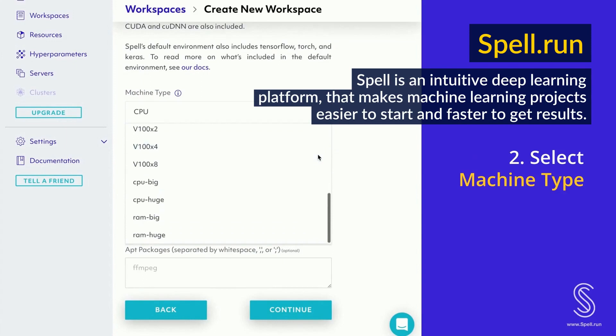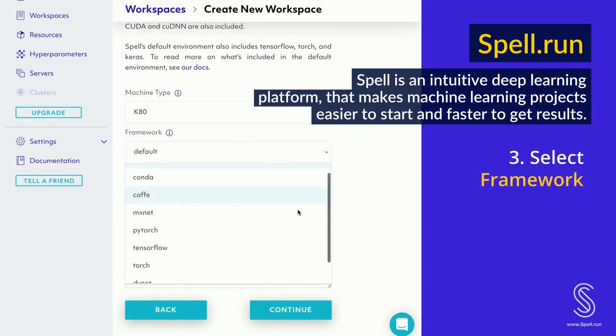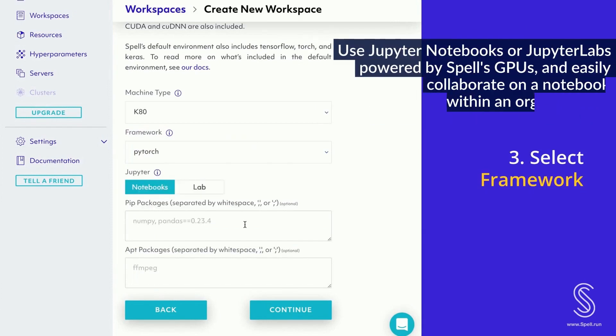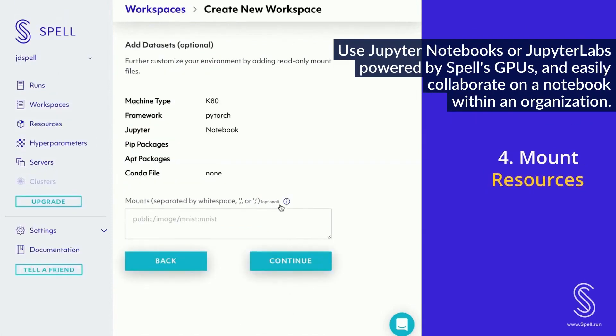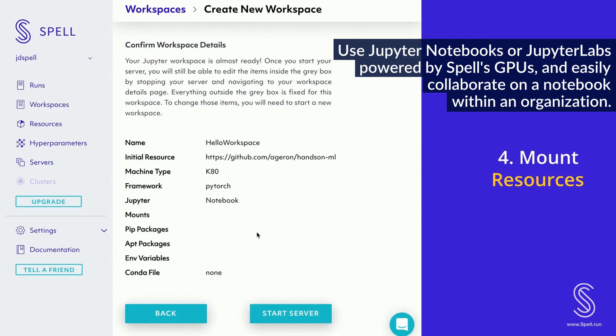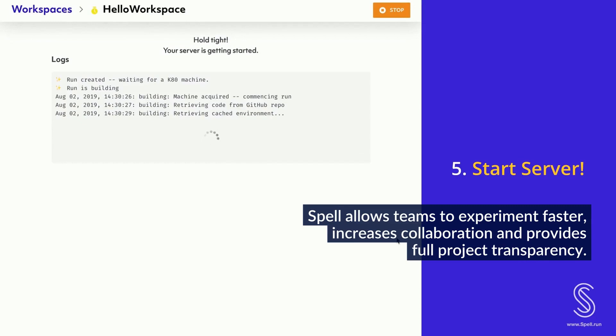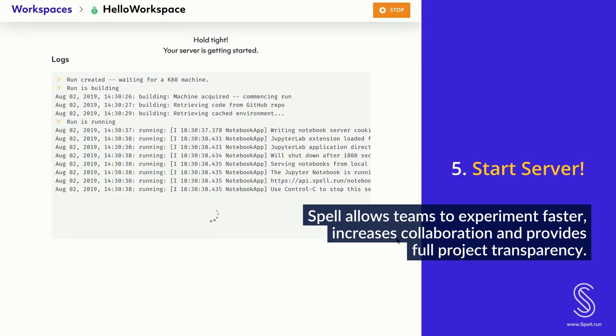Spell: Spell is an intuitive deep learning platform that manages your infrastructure and projects, making machine learning projects easier to start and faster to get results. Use Jupyter notebooks or JupyterLabs powered by Spell's GPUs and easily collaborate on notebooks within an organization. Spell allows teams to experiment faster, increases collaboration, and provides full project transparency.